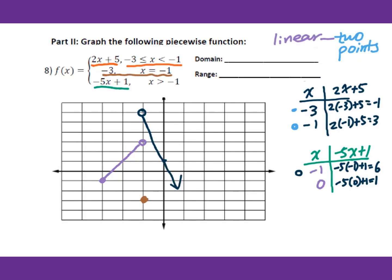Now work on the domain. From the graph, the very left point is negative 3 and there's no right endpoint, so it goes to infinity. There's no bottom point — that's negative infinity. The very top point is 6, and it's an open parenthesis. That is the range.